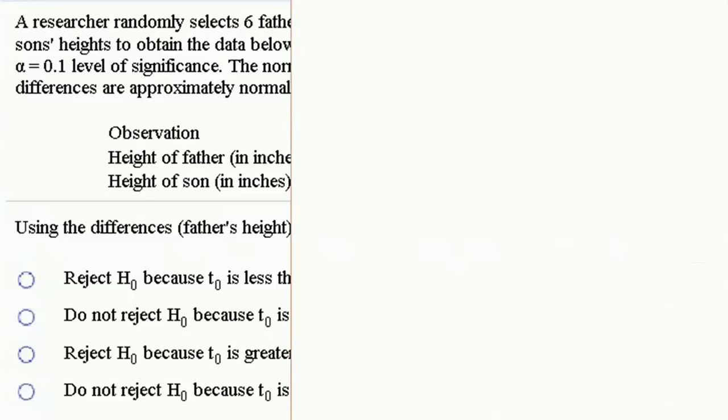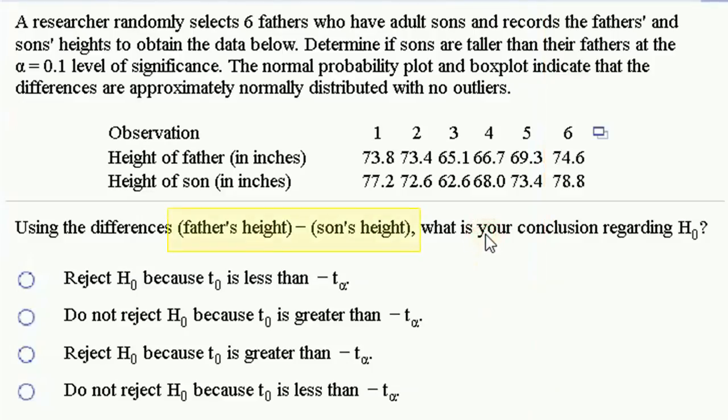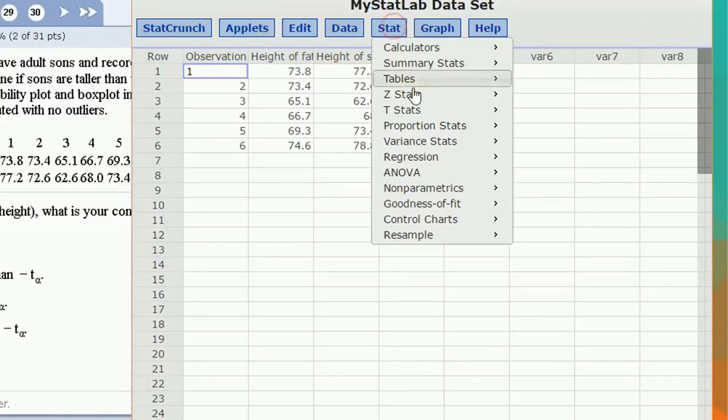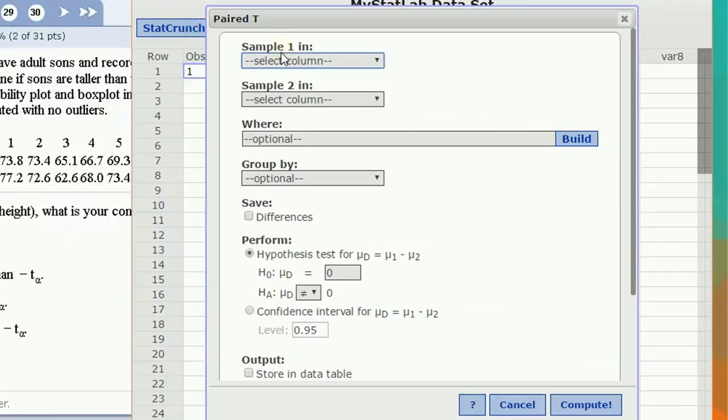I'm going to close this down. So we're going to use father's height minus son's height. We want to see whether sons are taller than their fathers. So here's our data. Since we have fathers and sons, we're going to pair them together. Under stat, we're going to do a t stat, not two sample, but paired. My first column is the height of fathers. Second sample is height of sons. And I'm going to, let's click save differences just for fun. It'll create a new column of differences. It's not strictly necessary.